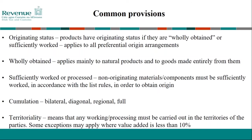There are some provisions that are common to all free trade agreements. When we talk about rules of origin, we talk about whether the product or material has originating status — whether the goods are wholly obtained or have been sufficiently worked in order to qualify for preferential treatment. Wholly obtained mainly applies to natural products and goods made from them. An easier way to think of this: a cow born and reared in Ireland will always have an Irish and therefore EU origin, and any meat or product made from the cow will also have that EU origin. If a product is not wholly obtained, then it must be sufficiently worked or processed in one of the FTA countries in order to obtain origin.